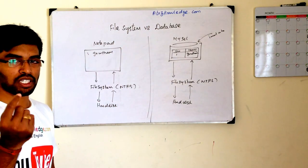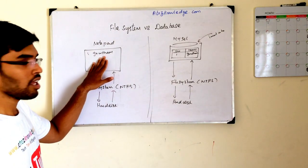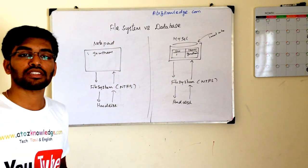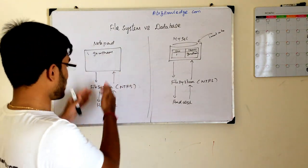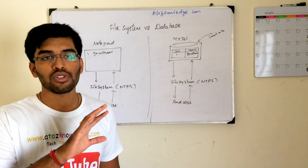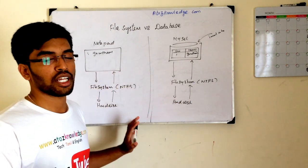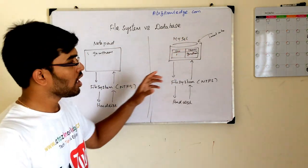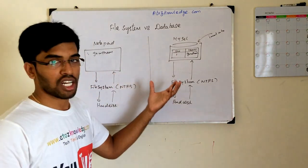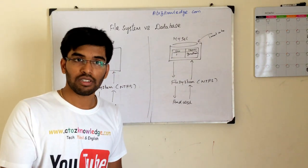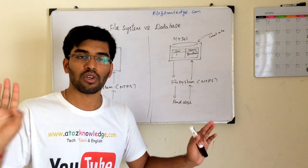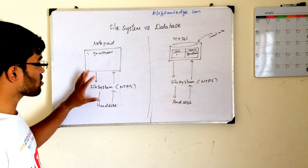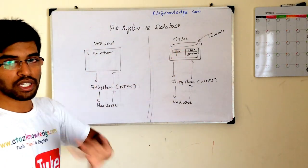The very first major difference is: when you store data other than through a database — directly via the file system — it gets stored as raw data. That means it is stored as-is, without any structure. There is no structure given to your data when you use something other than an RDBMS. But when you use an RDBMS or database, you store data with structure. Here I created a table with columns 'serial number' and 'name'. To interact with that structure, I use a separate query language called SQL — or whatever query language the database supports.